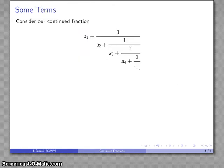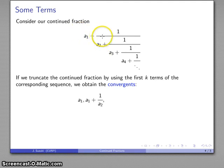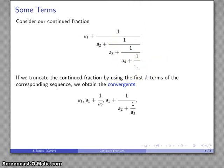Now we'll introduce another term. Consider our continued fraction — again expressed in the somewhat more conventional nested form. If I truncate the continued fraction by using the first k terms of the corresponding sequence, I obtain a convergent. What that means is: I select however many terms and ignore everything after that. Maybe I take just the first term, or the first two terms a 1 plus 1 over a 2, or the first three terms a 1 plus 1 over a 2 plus 1 over a 3, and so on. These are called the convergents of the continued fraction expansion. Because a 1, a 2, a 3 are all integers, all the convergents are rational numbers.